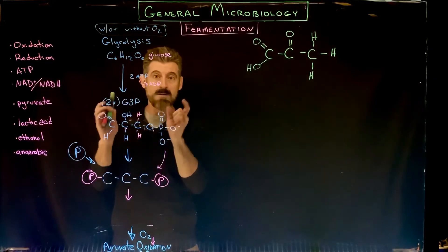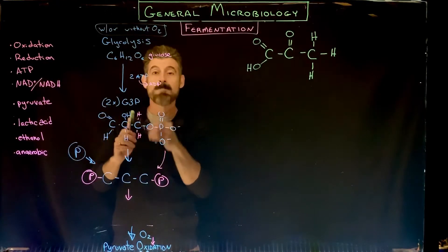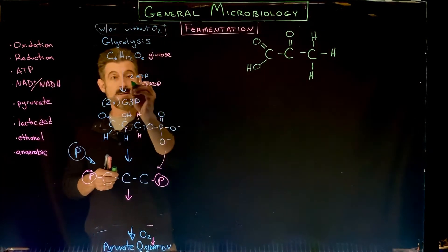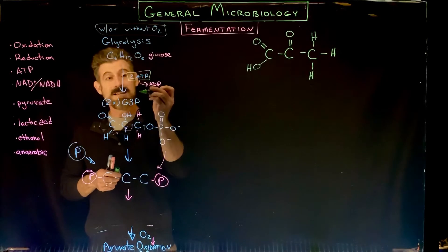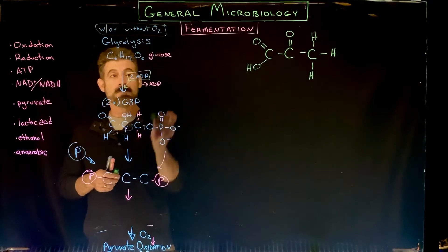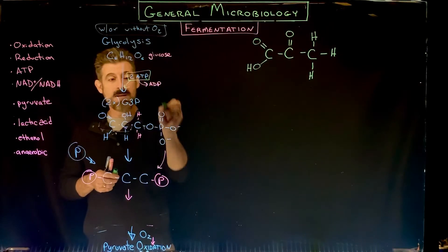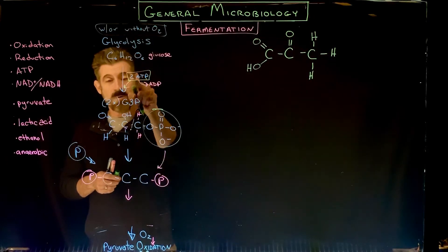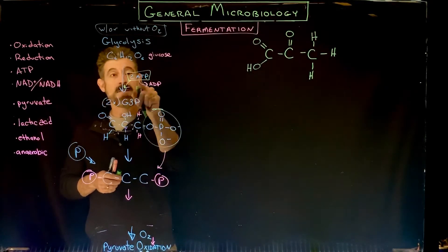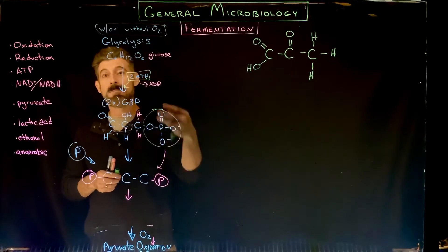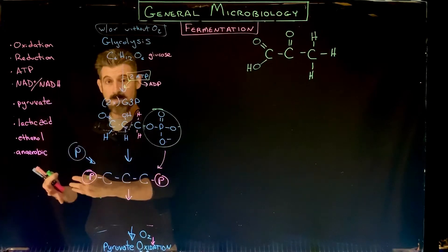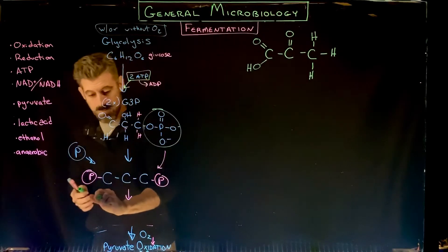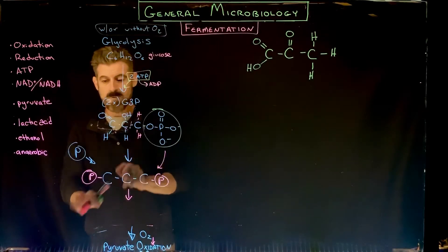Quick summary of glycolysis: a six-carbon molecule is split into two three-carbon molecules. Before that happens, the process uses two ATP, so there's an investment of two ATP into glycolysis. Phosphates from the ATP are then attached to the three-carbon molecule, coming directly from an ATP. Those two phosphates can be broken off later on and make two ATP.